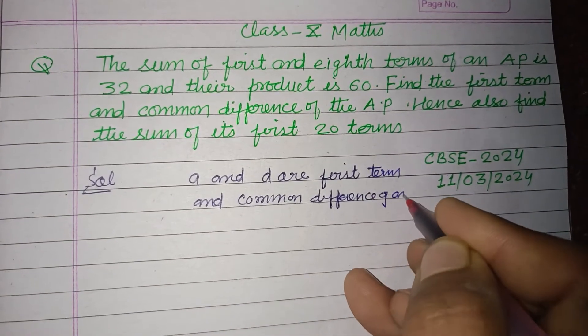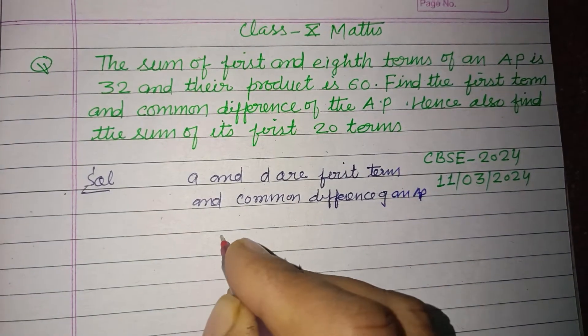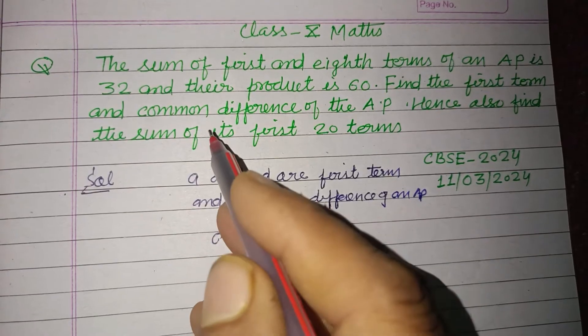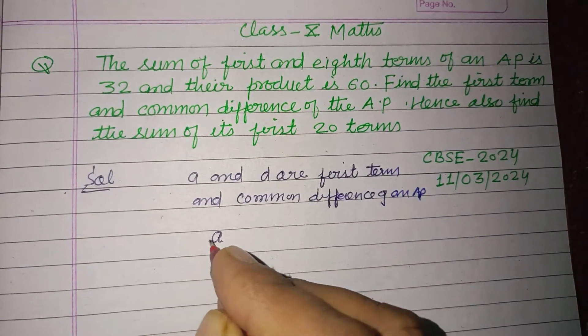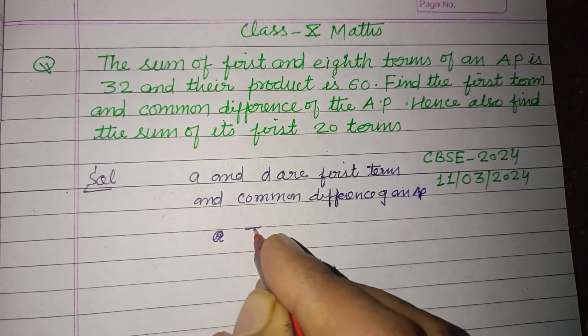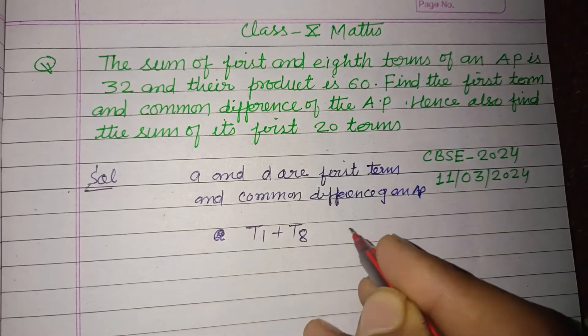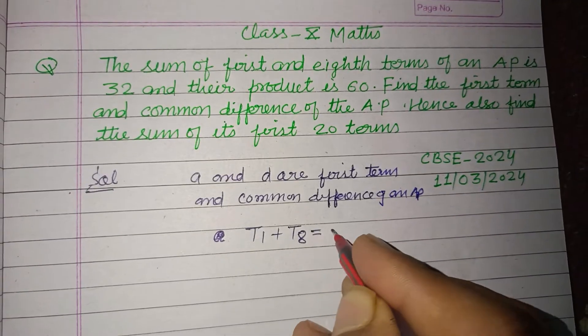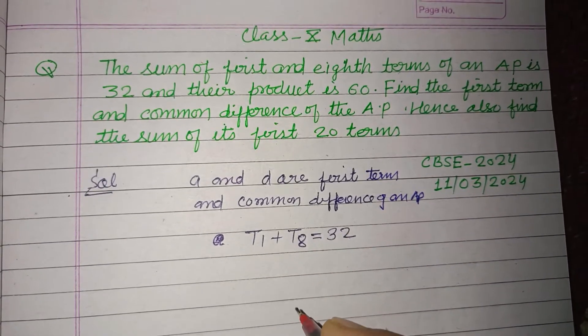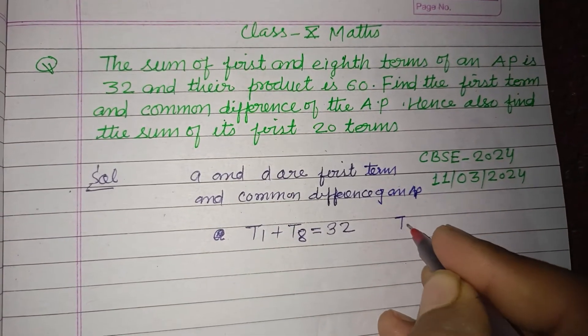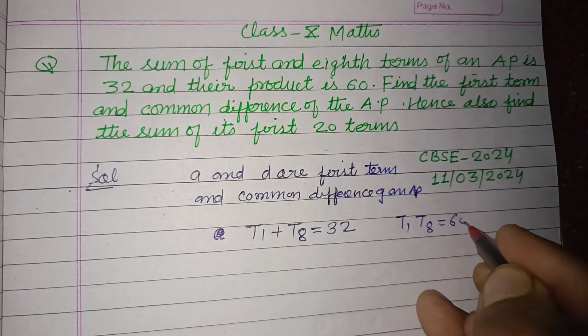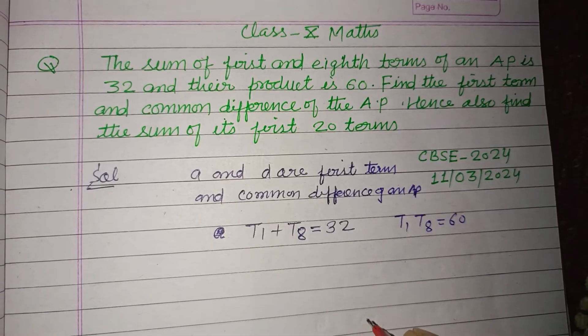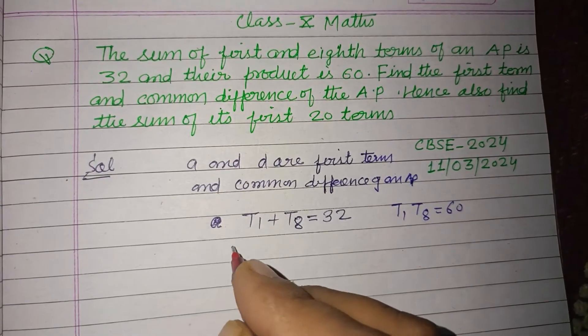Here the sum of first term and eighth term, so T1 plus T8 is given to us as 32, and their product T1 into T8 is given to us as 60.